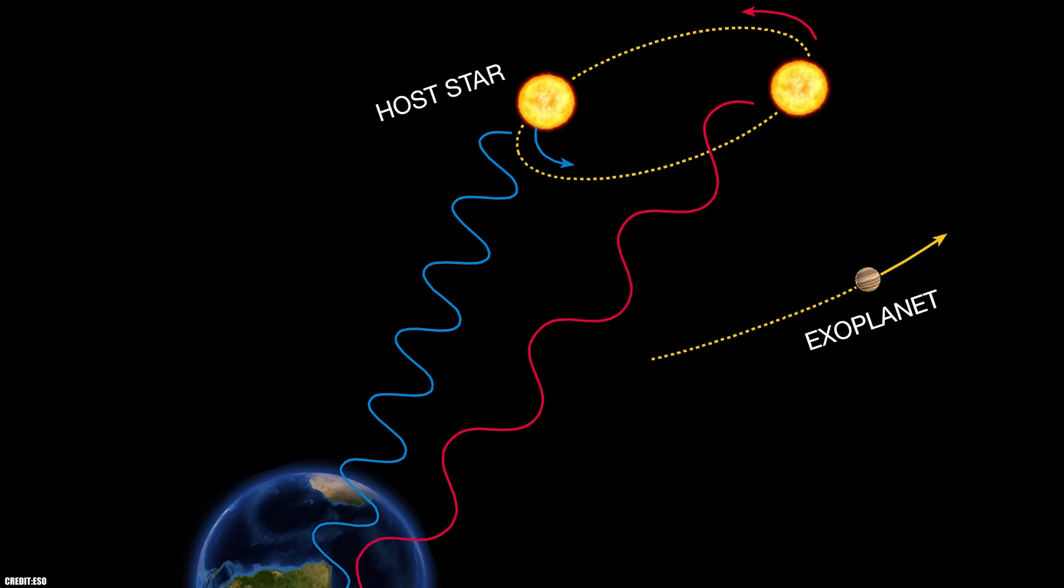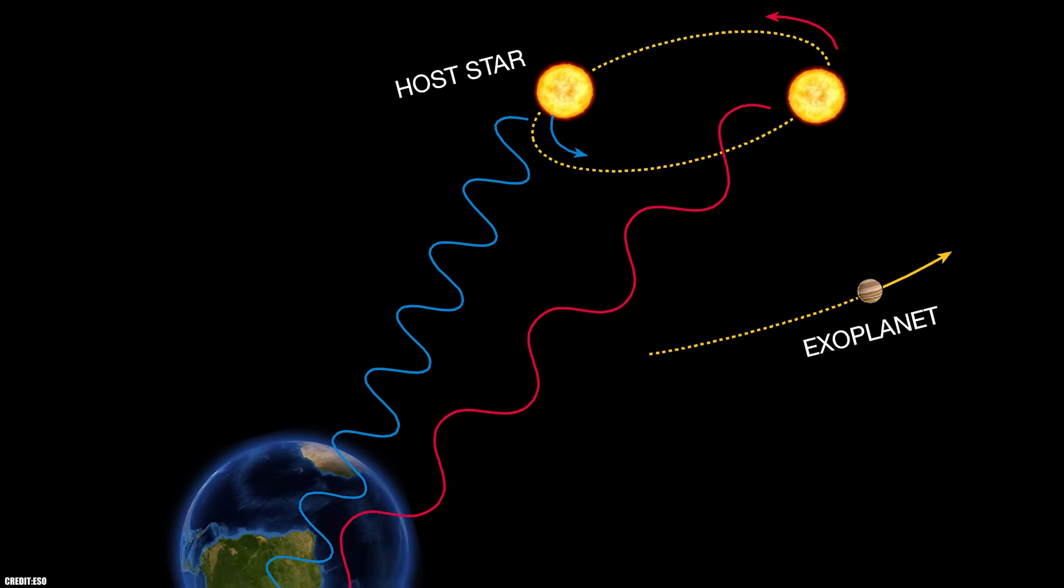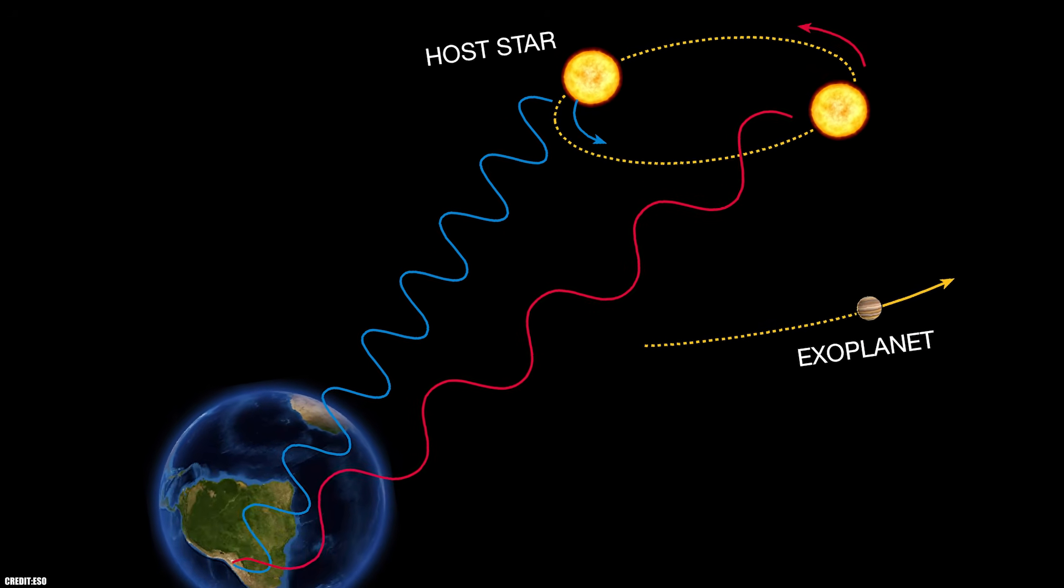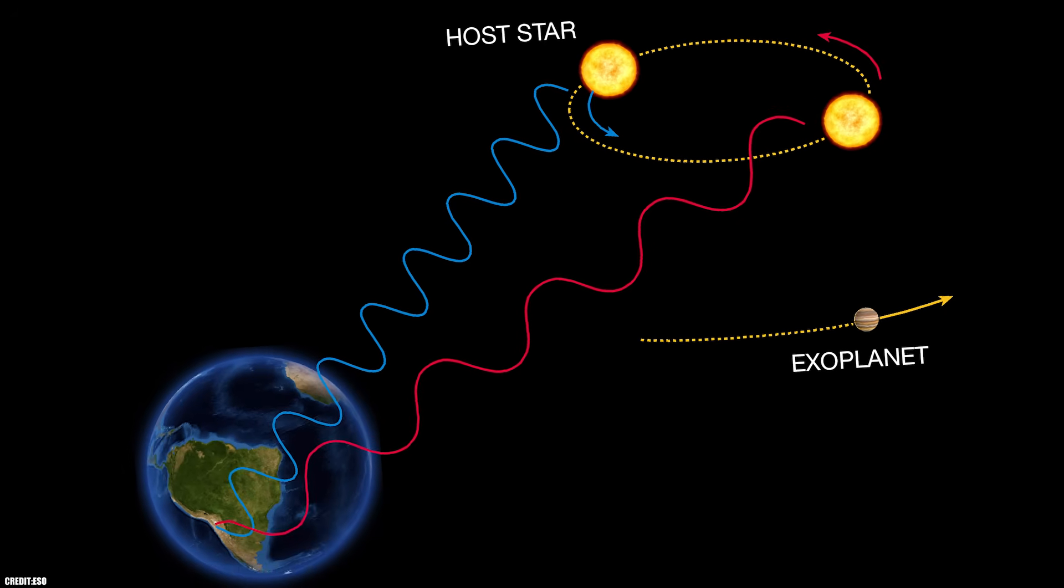Meanwhile, the radial velocity method, which measures how stars wobble from planetary gravity, gets muddied by the stars' own orbital dance around each other.